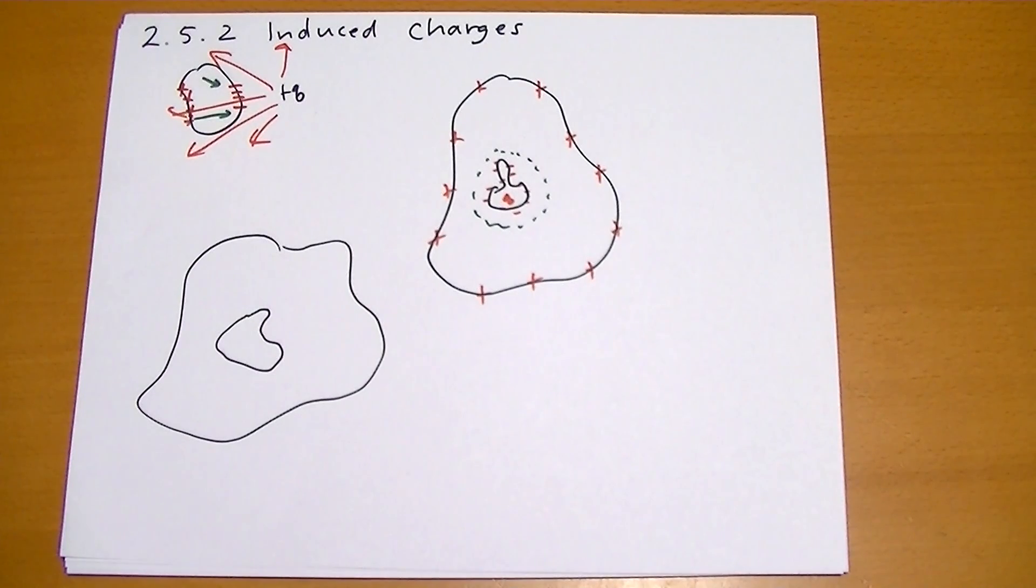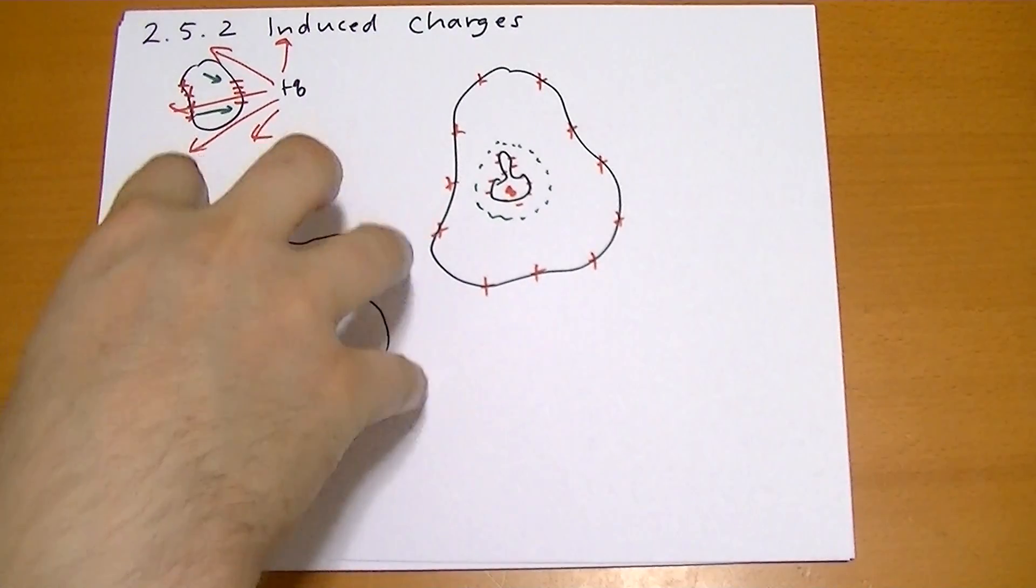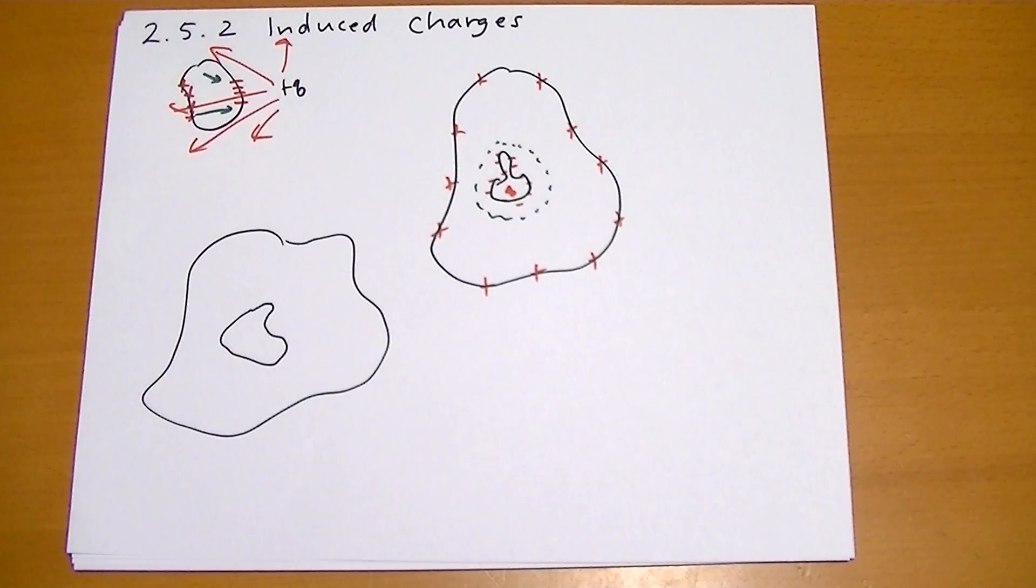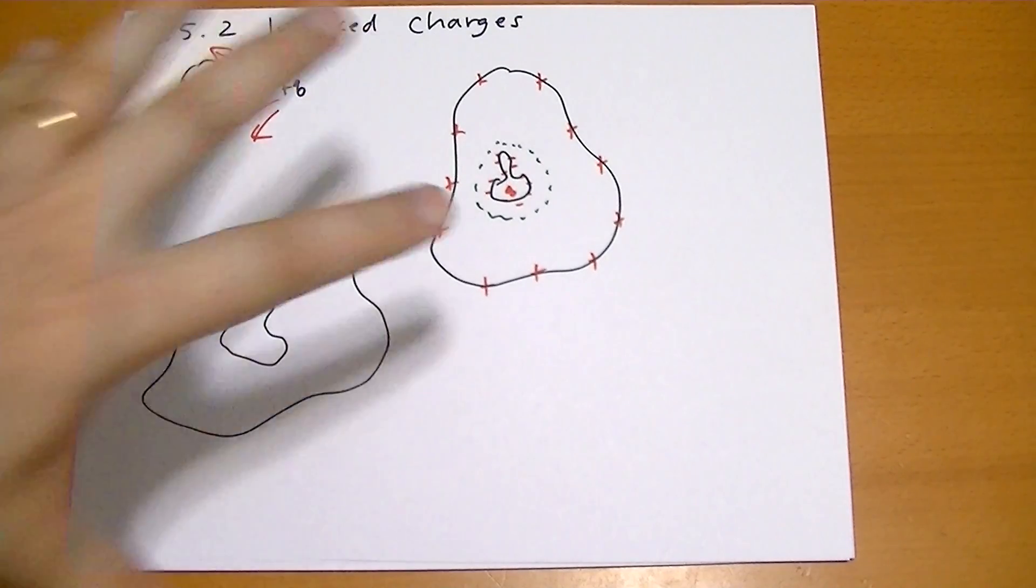We asserted earlier that the electric field inside cavities in conductors is always zero because outside fields can't have an effect. Actually, did we assert that? We're asserting it now. The electric field inside that cavity must be zero, no matter what's going on outside.